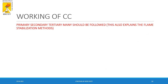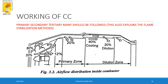In the working of a combustion chamber, it is split into three zones: the primary zone, the secondary zone, and the tertiary zone, also called the dilution zone. The primary zone is where the igniter and injector are present and ignition happens. The secondary zone is where the flame is stabilized, and the dilution zone is where the flame is extinguished.